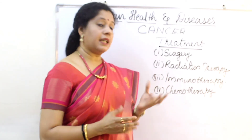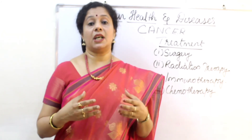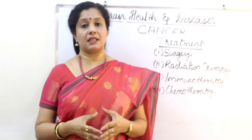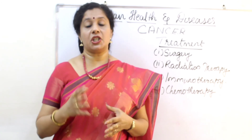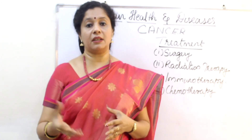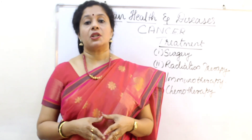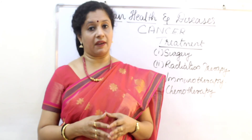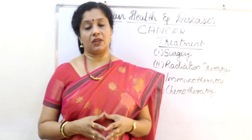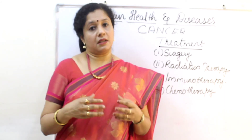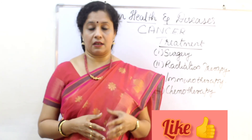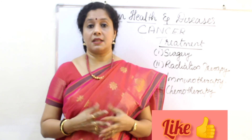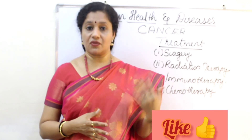The third treatment is chemotherapy, where chemotherapeutic drugs are used to kill cancer cells or stop DNA replication in those cells so that further multiplication does not happen. Many chemicals obtained from plants are effectively used in chemotherapeutic drugs. However, the side effects are often very severe, including hair loss, anemia, and nausea.